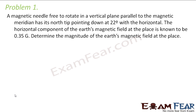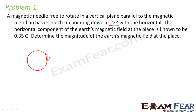Problem one says that a magnetic needle free to rotate in a vertical plane parallel to the magnetic meridian has its north tip pointing down at 22 degrees with the horizontal. Let us suppose this is our Earth. There is a magnetic needle which is free to rotate in the vertical plane, and it is pointing down 22 degrees with the horizontal, so this angle is 22 degrees.